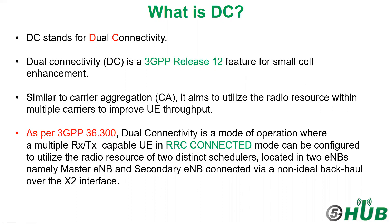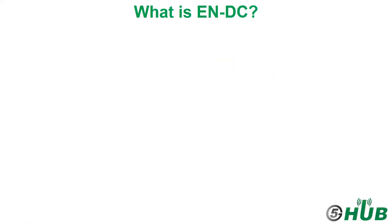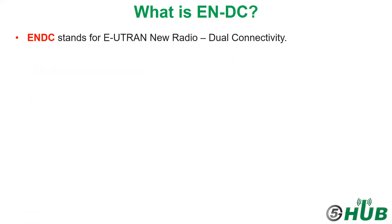Here we are talking about something called EN-DC. EN-DC stands for EUTRAN New Radio dual connectivity. EUTRAN is for LTE, New Radio is for 5G, and dual connectivity means we can get data from two entities — one eNodeB for LTE and one gNodeB for 5G.